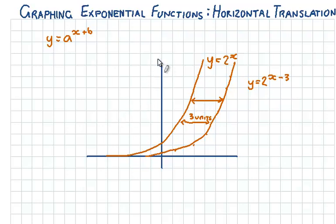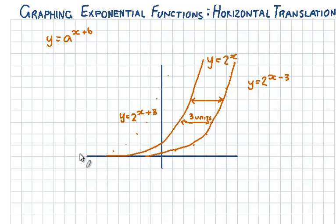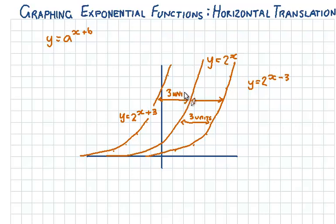Likewise, if I were to graph the function y equals 2 to the power of x minus 3, I'd have to move every point 3 units to the right. Each of these points moves 3 units to the right. So this is the effect of adding a constant in the exponential term — it shifts the function to the left or to the right.